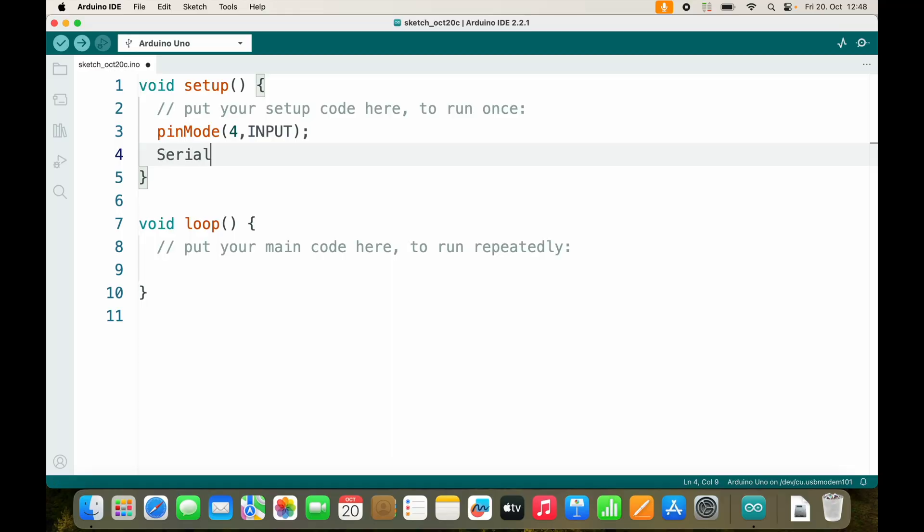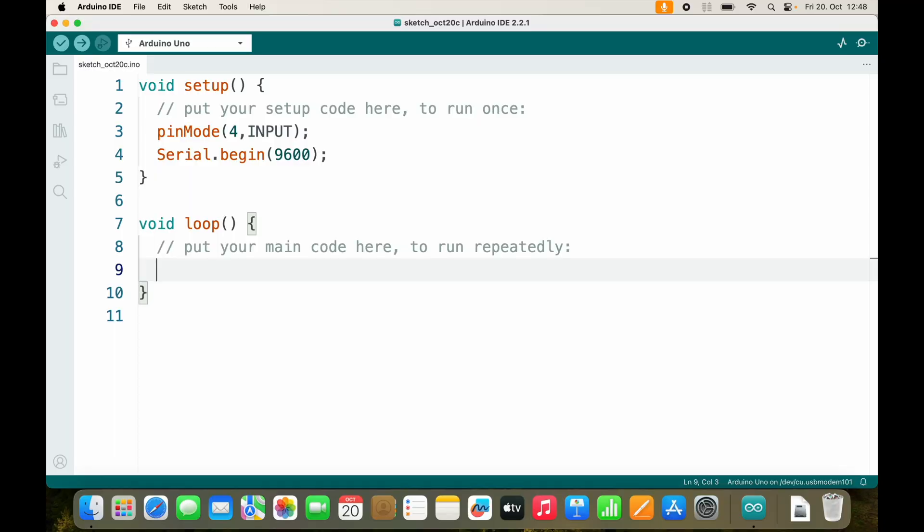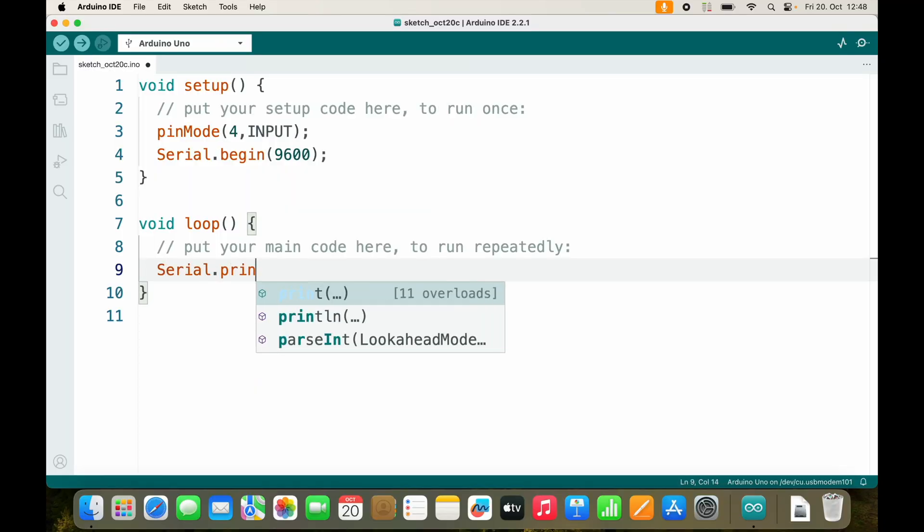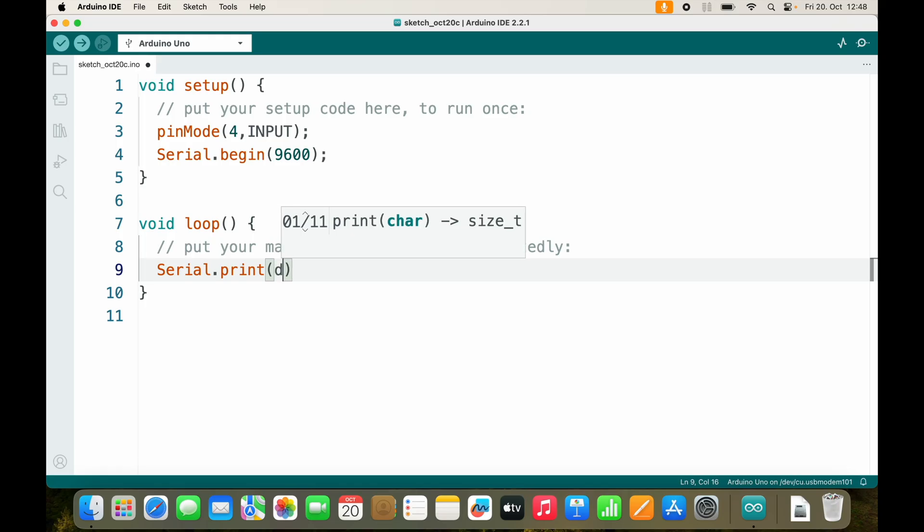In order to see what's going on, we will use the serial connection. So we will Serial.begin(9600). Inside of our loop, I want Arduino to digitalRead pin 4 and send me the result to the serial connection. This can be done by using Serial.print, but inside of the round brackets we want to get the result of digitalRead. So we will put digitalRead(4) inside of Serial.print. What we also want is a delay of 1000 milliseconds.